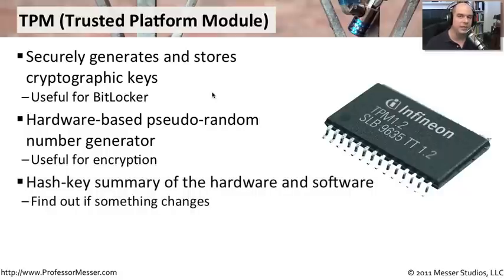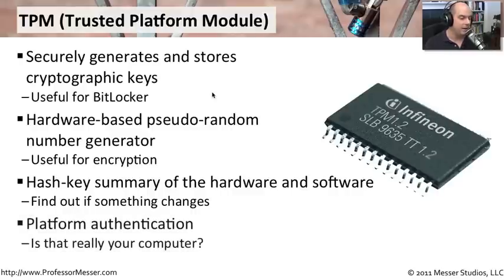You can also get a hash key summary of everything in your computer. So if you want to compare what the hardware configuration of a PC is today versus tomorrow, you can compare it based on a hash created in the TPM. This makes it very easy to tell whether anything has changed — you don't even have to do a full inventory. You just check the hash on your trusted platform module and you'll know immediately what's inside that computer. It's also a great way to uniquely identify your computer, since you can query the TPM and get back a secure key that proves it's really your machine.